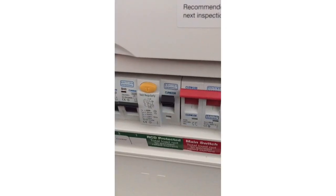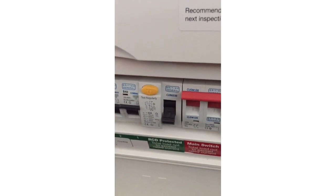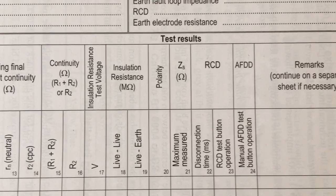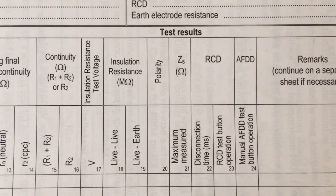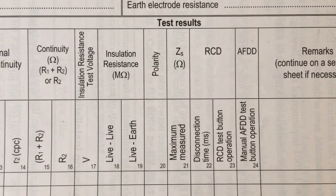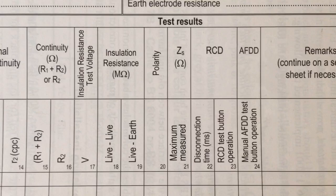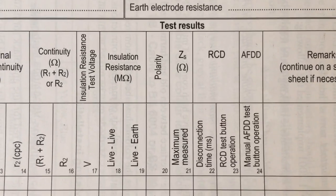And the last test of course is to operate the button. There we go, it works. When we come to recording the information and documentation, it gets a tick in the inspection schedule, and on the schedule of the test results we're going to record the value for the five times test and the fact that the RCD operated when we press the button.